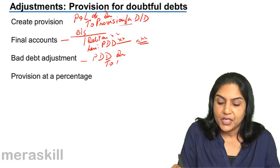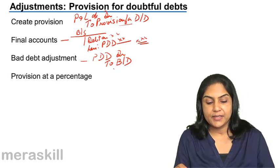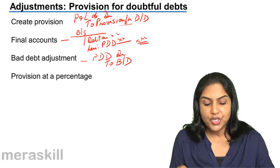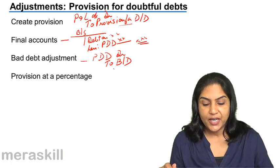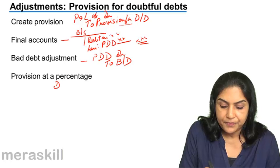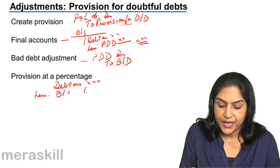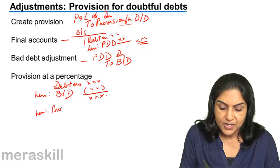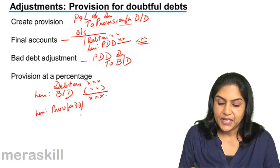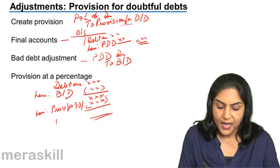Bad debts may be adjusted against provision for doubtful debts: Provision for Doubtful Debts Account debit to Bad Debts. The provision is often taken as a percentage of the debtors. In such a case, whatever debtors figure appears in the balance sheet — debtors less any bad debts — the provision is computed as a percentage of that figure, and this is the net amount of debtors that appears in the balance sheet.